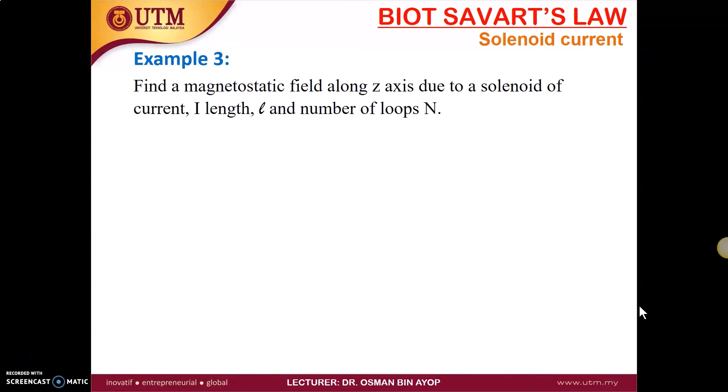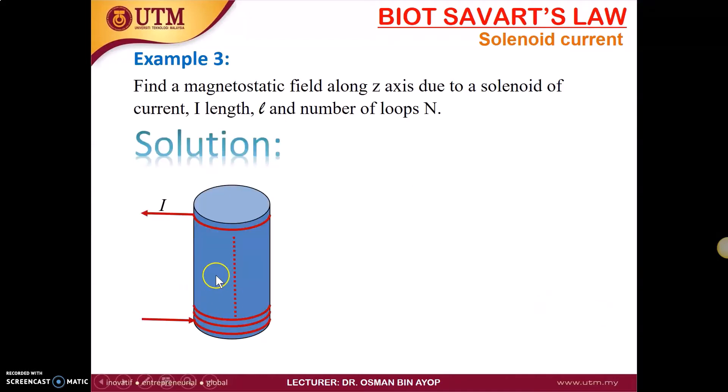Next we go to Example 3, which is for the case of solenoid current. The question is: find a magnetostatic field along z-axis due to a solenoid of current i with length l and number of loops N. We can imagine you have a long wire with multiple loops in the form of a cylinder.